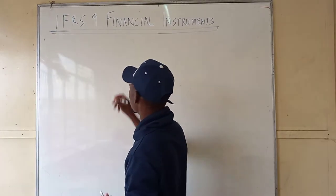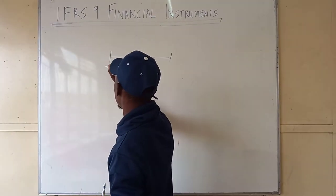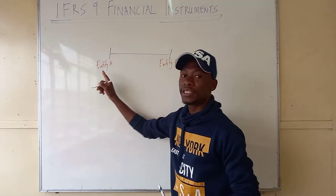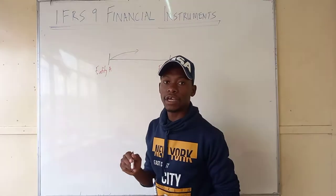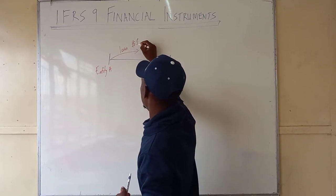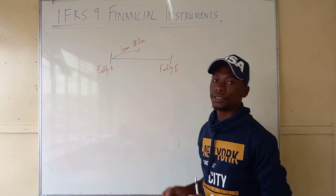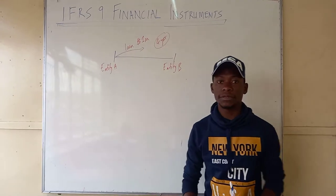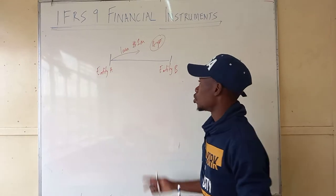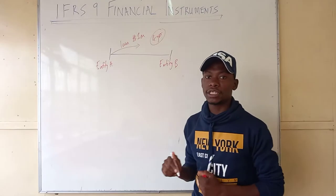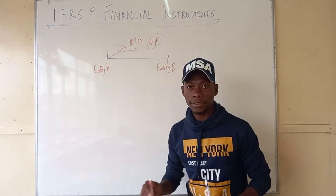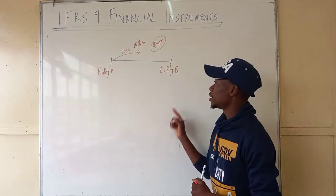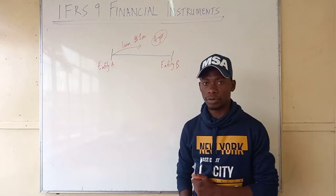For example, we might have Entity A and Entity B. Entity A might give a loan to Entity B. The agreement is four years — Entity B is expected to repay after four years. When Entity A looks at Entity B, they will say Entity B is their trade receivable. When Entity B looks at Entity A, they will say Entity A is the trade payable.